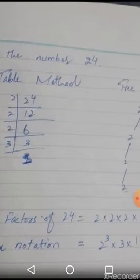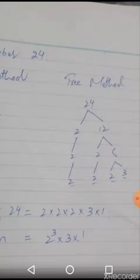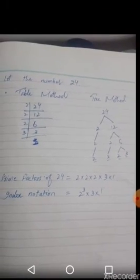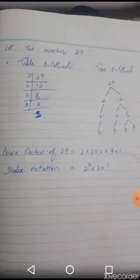Similarly, we have the tree method. We can write the prime factors of 24 as 2 × 2 × 2 × 3 × 1. In index notation, we can write the prime factors as 2³ × 3¹, which means 2 multiplied 3 times and 3 multiplied 1 time.